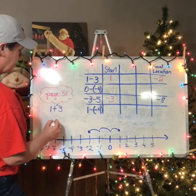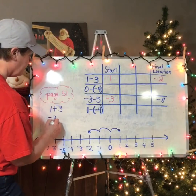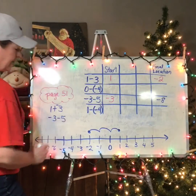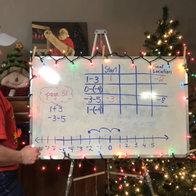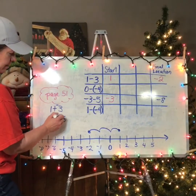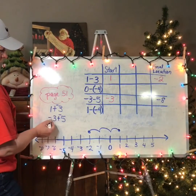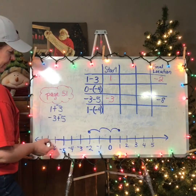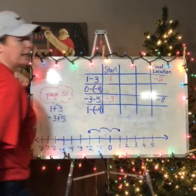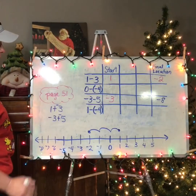Same thing for the third example. If I start at negative three and I switch this problem to add the opposite, I have negatives plus more negatives, so I'm going to end up at negative eight, as we did with our drawings earlier this week.